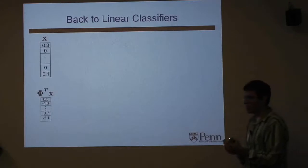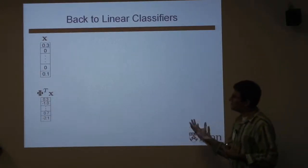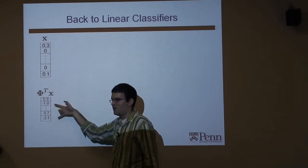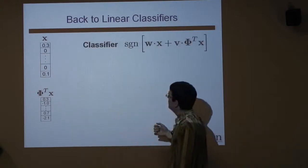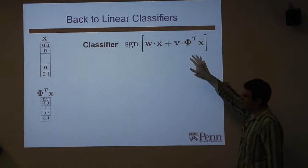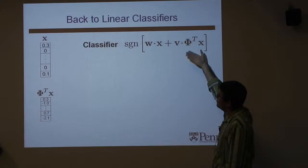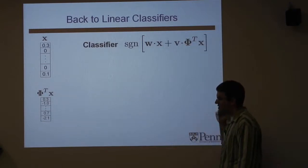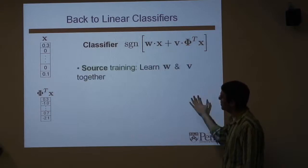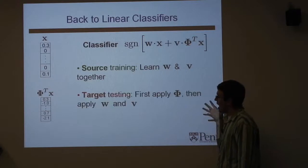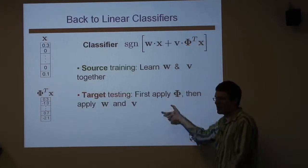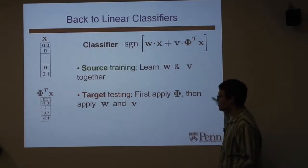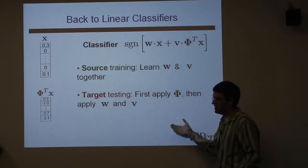Back to the second step: how do we use this in a linear predictor. We have the high-dimensional vector and its projection — say we took the top 50 singular vectors, we have a projection onto a 50-dimensional real-valued space. We just had a weight vector for x; now we have another weight vector for Phi-transpose x, and we add the two together. At train time, we learn w and v together. At test time, we first apply Phi and then apply w and v. The hope is that the representation Phi is good for domain adaptation, and we can classify instances in the new domain using v.